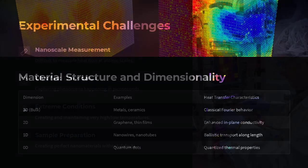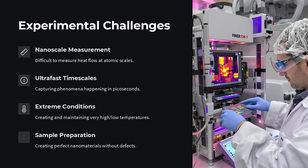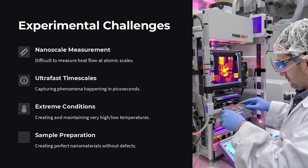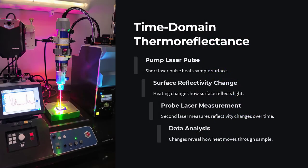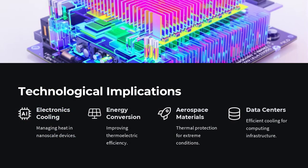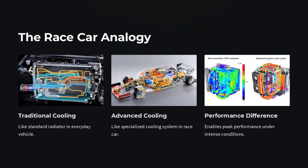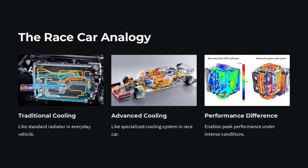You might ask: why does this matter? Because our entire thermal management infrastructure — cooling of electronics, design of materials, thermal imaging — assumes Fourier's law holds true. But in nanoscale devices, where layers are just a few atoms thick and timescales are ultra-fast, classical assumptions collapse. Your smartphone, quantum computer, or next-generation solar cell might already be operating in a regime where anomalous heat transfer dominates.